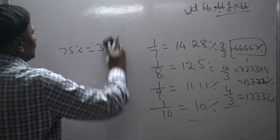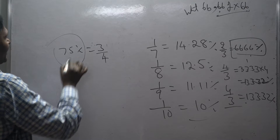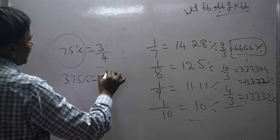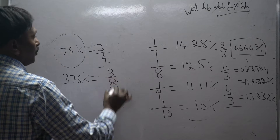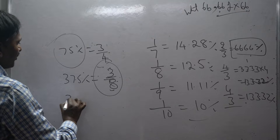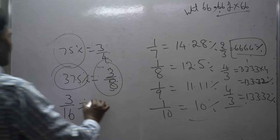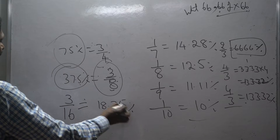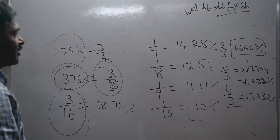75 percentage is equal to 3 by 4. Half of that gives 37.5 percentage, which is equal to 3 by 8. If you divide 3 by 8 in half again, you get 3 by 16, which is equal to 18.75 percentage. If you remember these percentage reciprocals, you can solve all the problems easily.